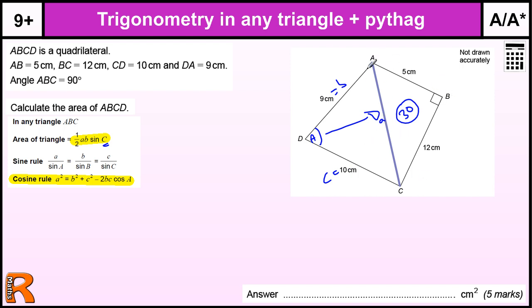We need to work out little a. This is a right angle triangle so we can work out A using a bit of Pythagoras. A squared equals 5 squared plus 12 squared. That gives you 169, so A is going to be the square root of 169 which is 13. It might be familiar to you as a standard right angle triangle: 5, 12, 13.